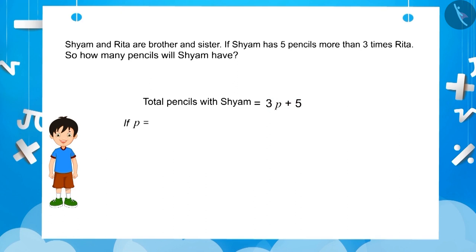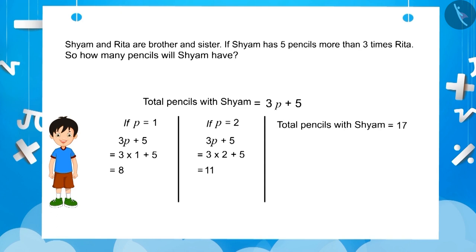If P is equal to 1, then the value of 3P plus 5 will be 8, or if P is equal to 2, then the value of 3P plus 5 will be 11. Similarly, if we say that the total number of pencils with Shyam is 17, then we represent it as follows.